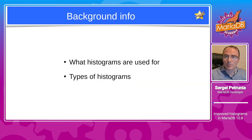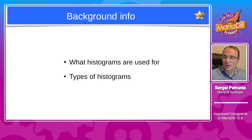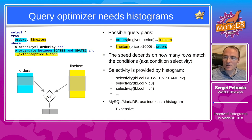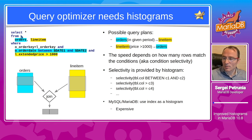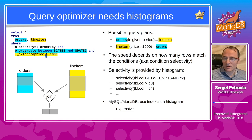Before we talk about improvements to histograms, we'll need a few slides with background information: what histograms are used for in MariaDB and what types of histograms there are. Histograms are used by the query optimizer. Suppose we've got a join query where we scan orders and their items, looking for orders placed in a specified date range and items with a price greater than 1000.